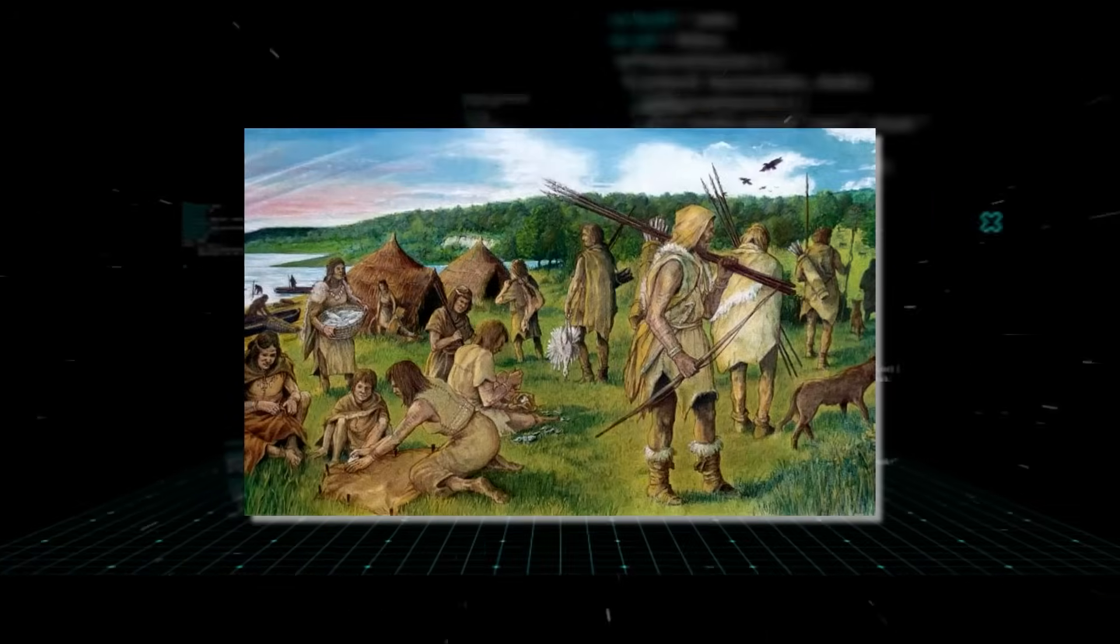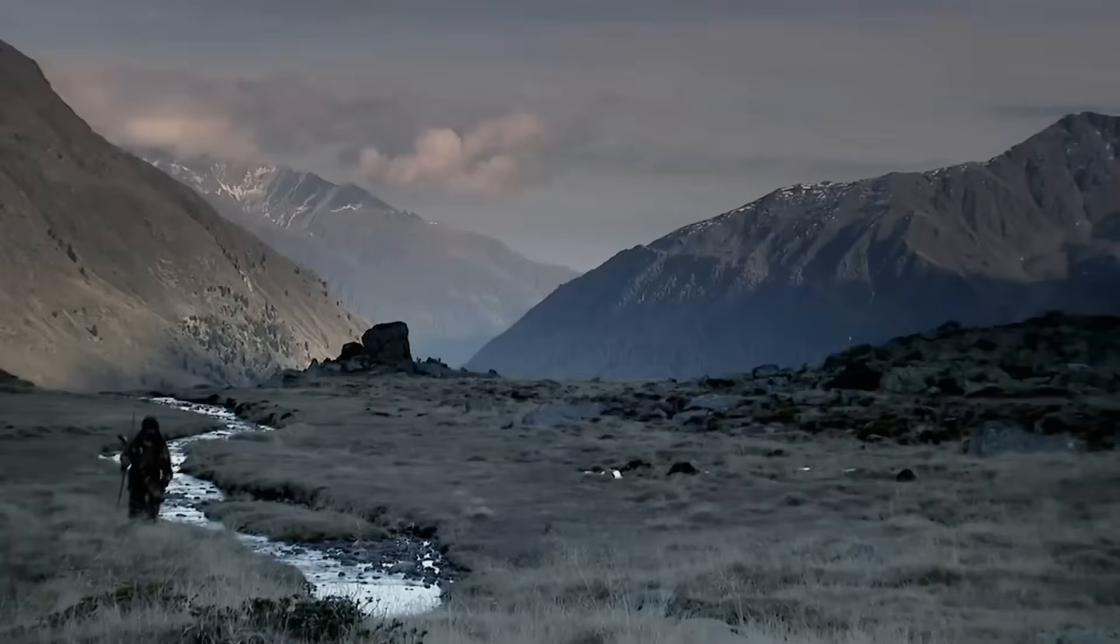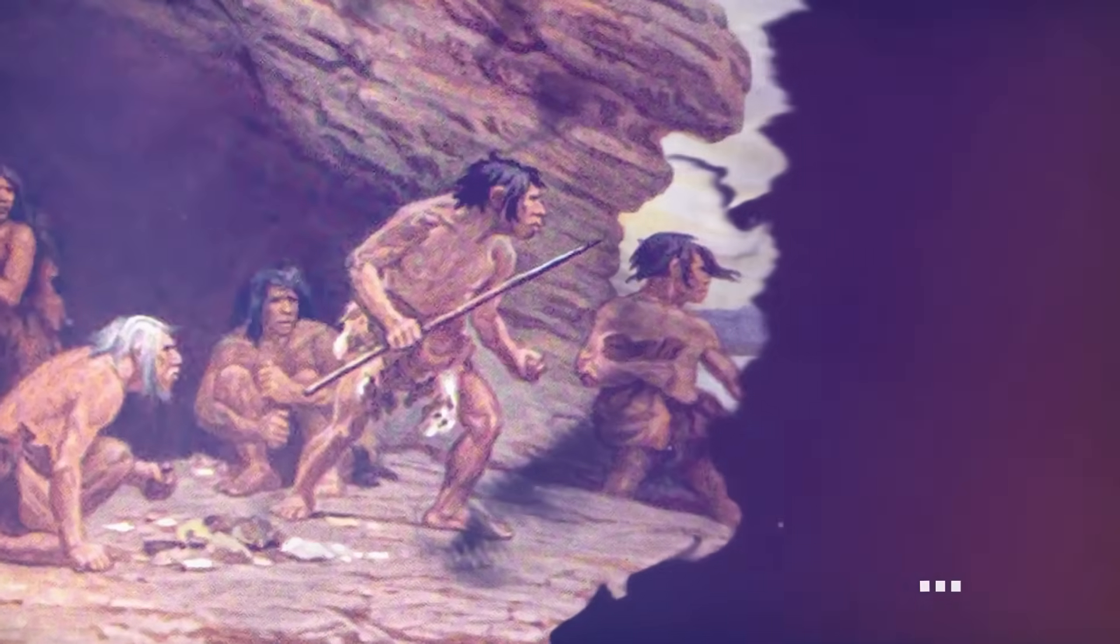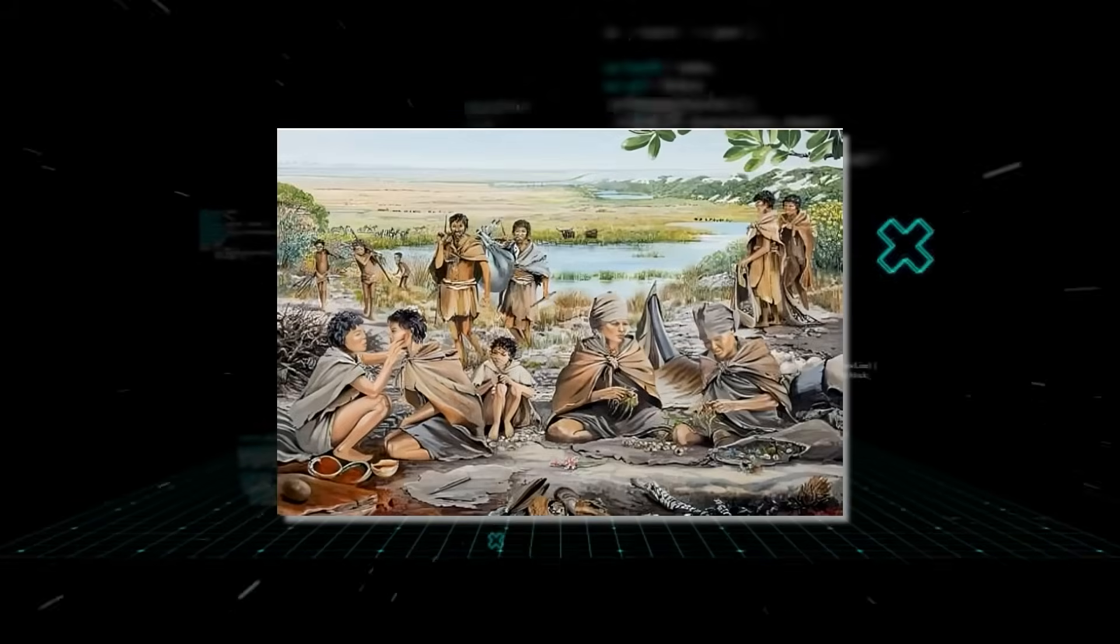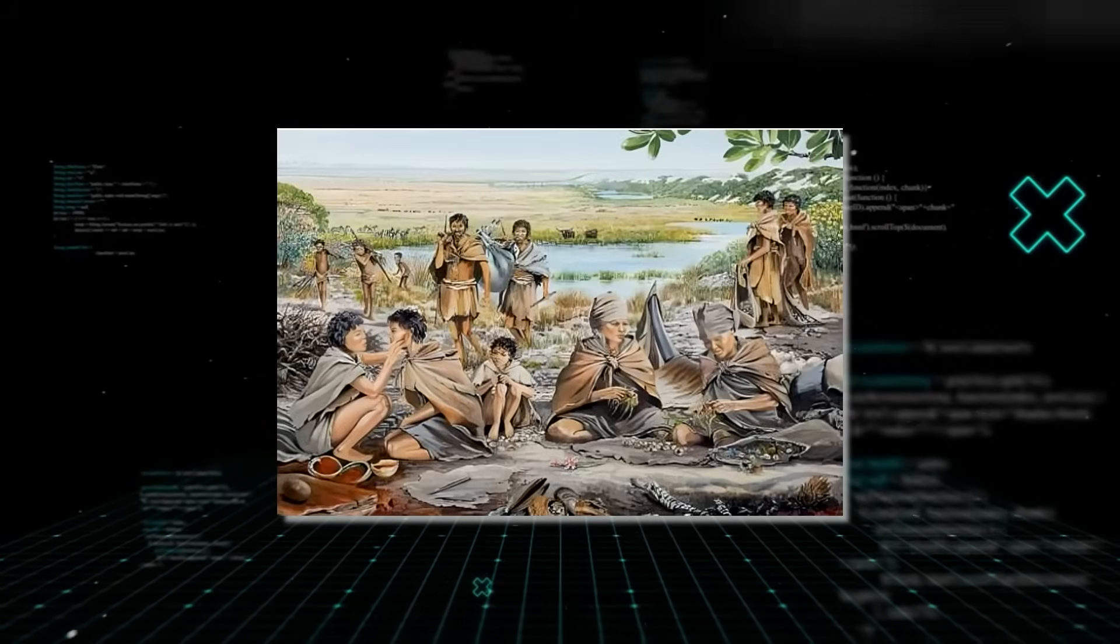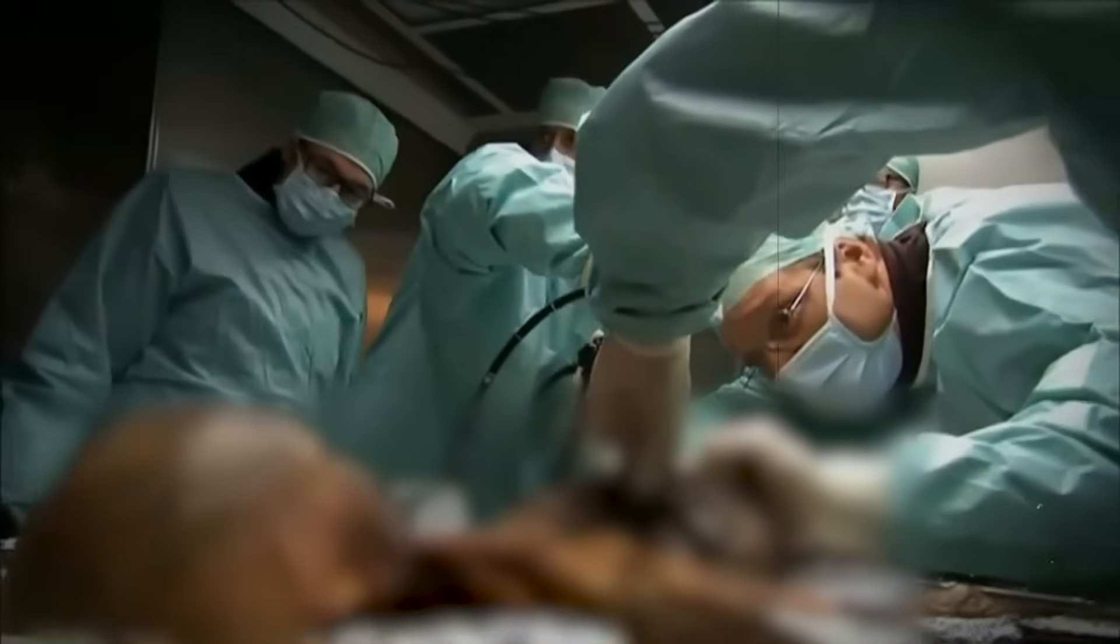While the rest of Europe was a genetic melting pot, his community was like an island, cut off from the rest of the world. This isolation meant something profound. Ötzi was a member of a nearly vanished branch of humanity. His genetic line, that of the early Anatolian farmers, was almost completely wiped out by later migrations. He wasn't an ancestor to modern Europeans. He was a ghost from a lost population.